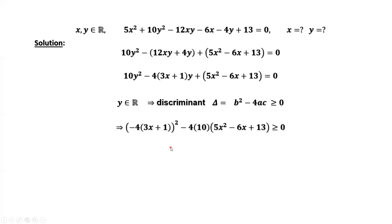Then we have 2(3x + 1)² - 5(5x² - 6x + 13) ≥ 0.